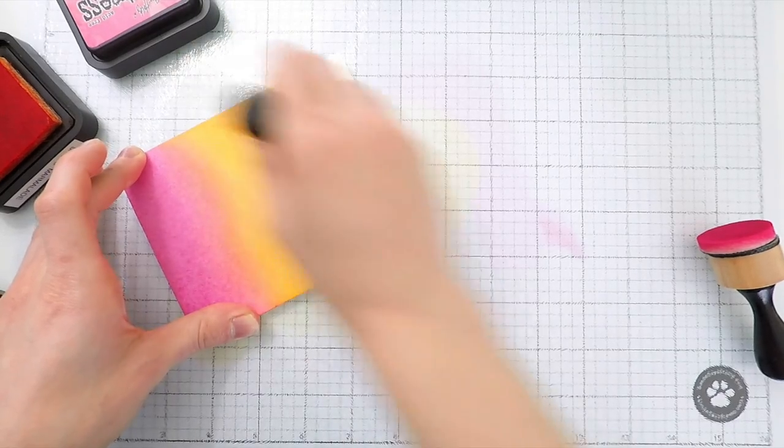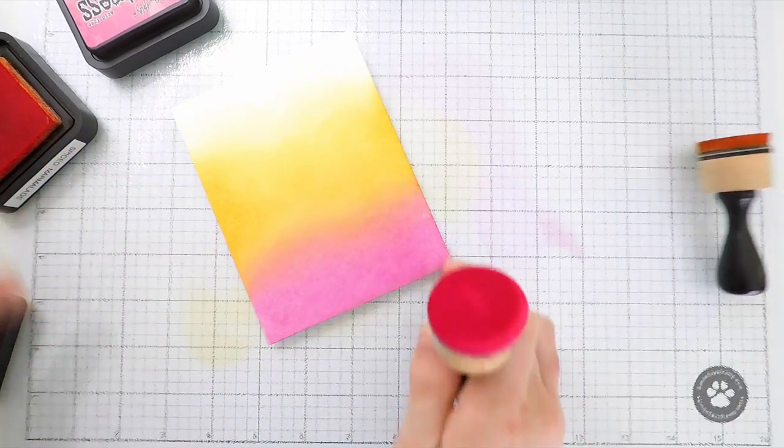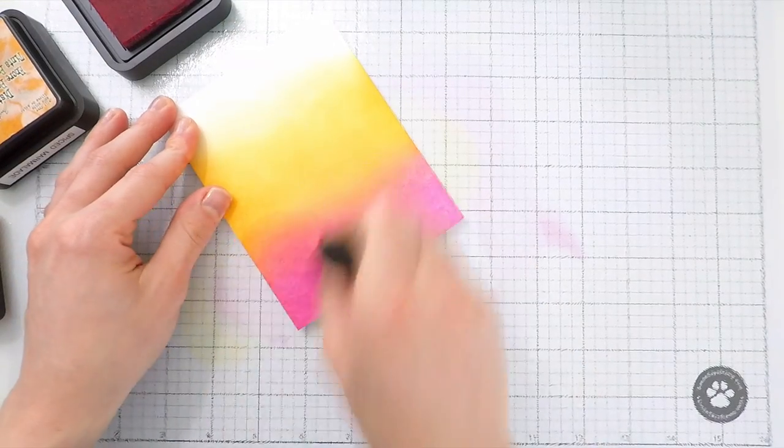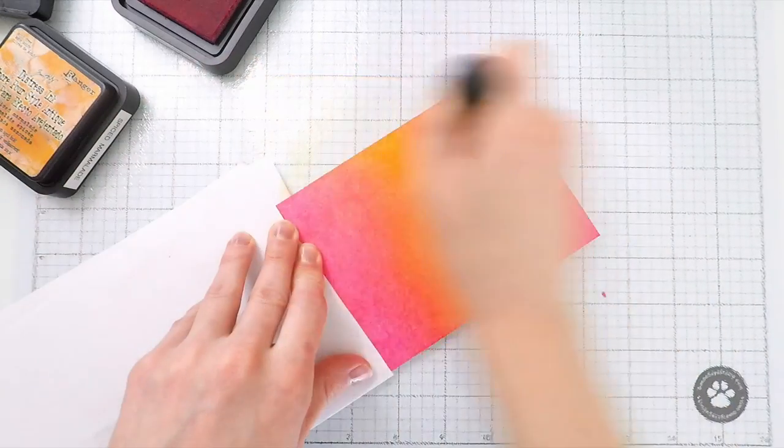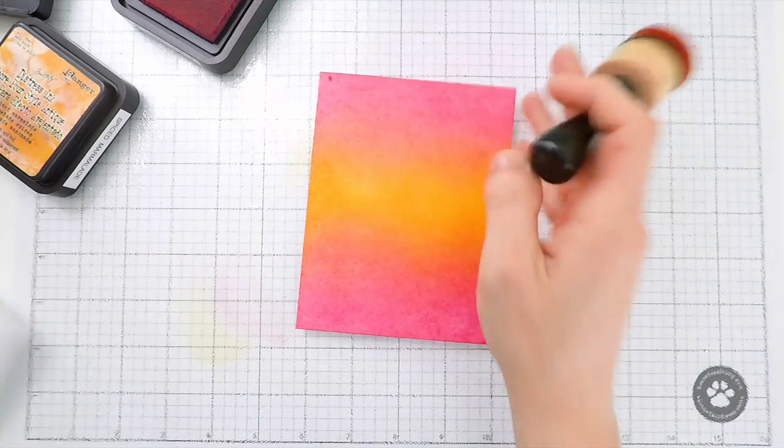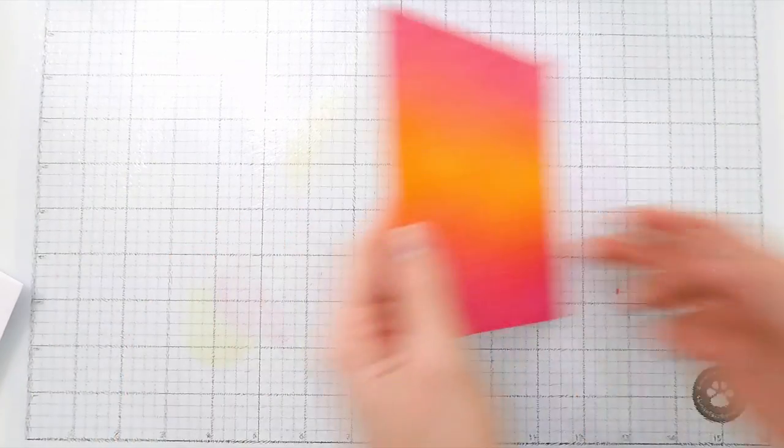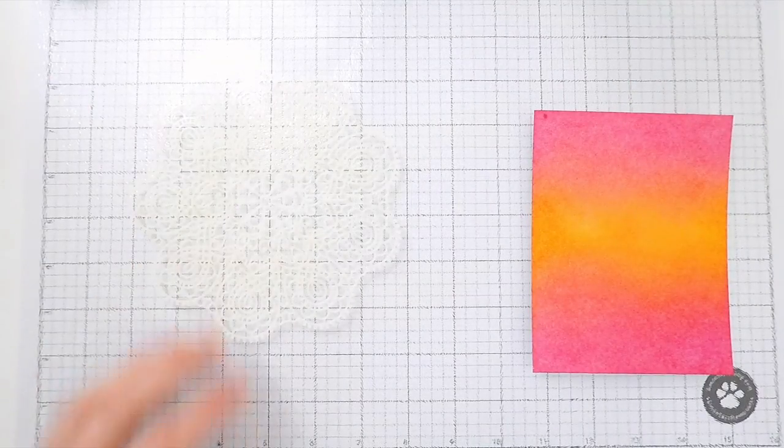One thing to keep in mind when blending on bristol smooth paper is that you're going to want to not touch the ink as you've added more color on because it will collect fingerprints. As I'm finishing this up, I'm using a piece of paper to hold the other end so that way I don't get any fingerprints on my ink blending.